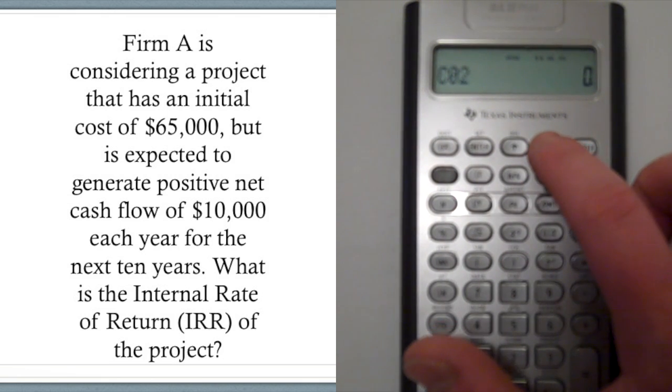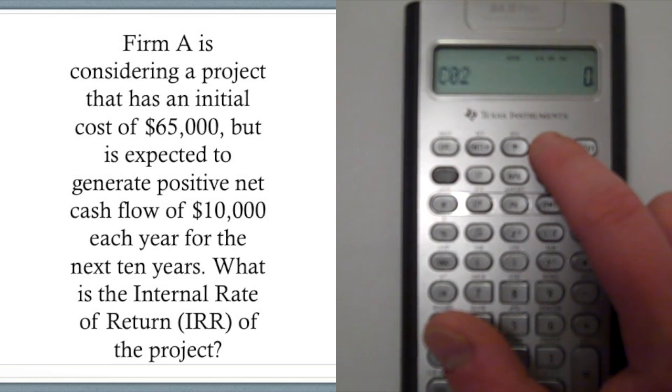Now, if you press down, it should say C02. And as long as that's zero, it won't allow you to go any further. And that signals that it's the final cash flow.